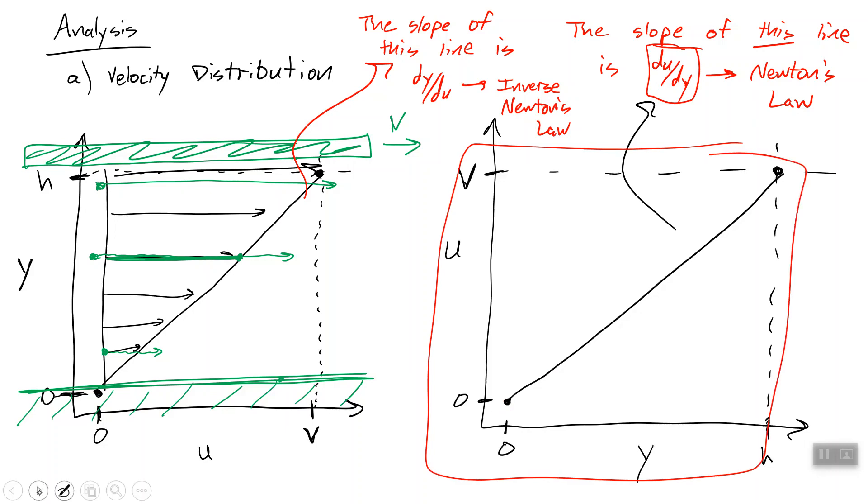So I just wanted to make clear that when we draw these velocity profiles, it's a little confusing because the derivative that we need to find for Newton's law is actually a derivative for this plot. Okay, so let's go ahead and move to part B, which is to find the shear stress at the wall.